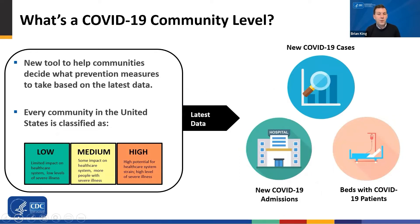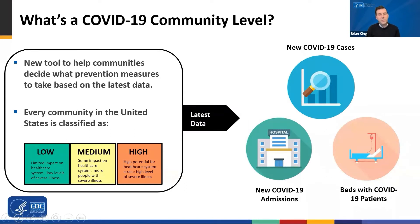That's new COVID-19 admissions per 100,000 persons in the past week, the percent of staffed hospital beds occupied by COVID-19 patients, and the total new COVID-19 cases per 100,000 people in the past week. The new COVID-19 admissions and the percent of staffed inpatient beds occupied represent the current potential for strain on the health system.